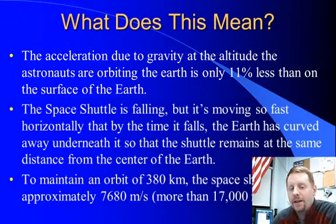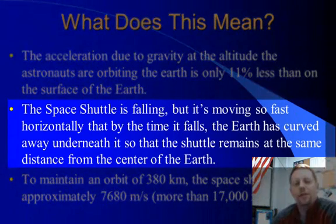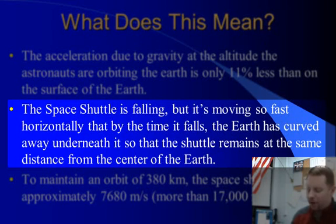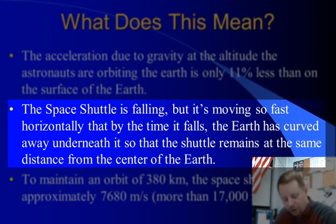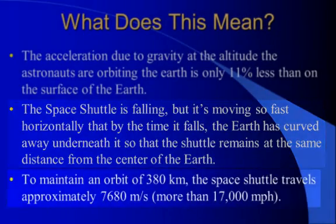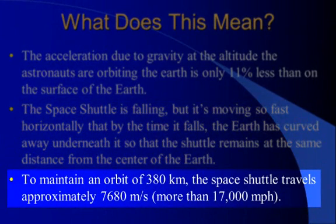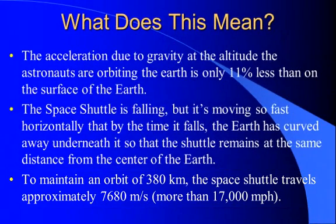So there's still quite a bit of acceleration due to gravity. The space shuttle is falling, but it's moving so fast horizontally that by the time it falls, the earth is curved away underneath the space shuttle. So the shuttle remains at the same distance from the center of the earth. Now to maintain an orbit of 380 kilometers, the space shuttle travels approximately 7,680 meters per second. That's over 17,000 miles per hour, roughly 23 times the speed of sound at sea level. So the space shuttle is moving very, very fast to maintain this orbit.